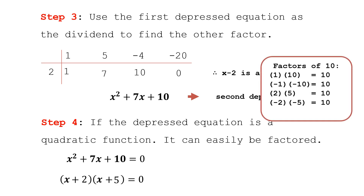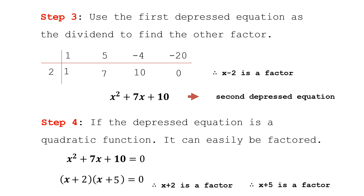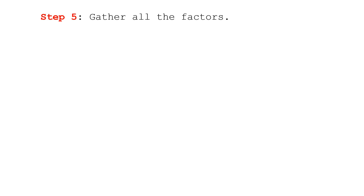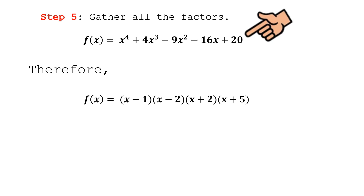The complete factors of 10 are: positive 1 times positive 10, negative 1 times negative 10, positive 2 times positive 5, and negative 2 times negative 5. Only positive 2 and positive 5 add to give positive 7. So the factors are x plus 2 and x plus 5. Gathering all factors: f(x) = (x−1)(x−2)(x+2)(x+5). We have four factors because the polynomial is degree 4.